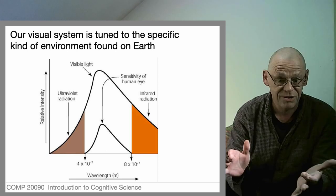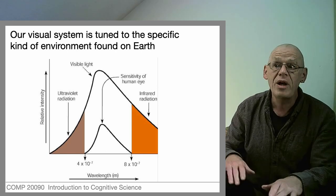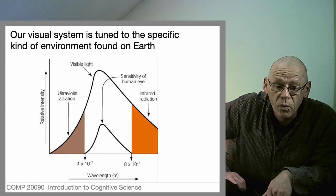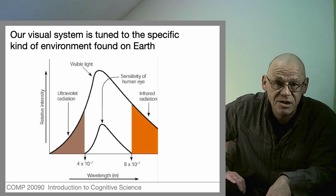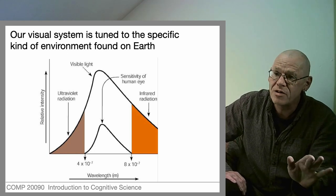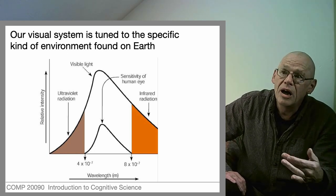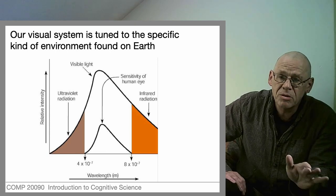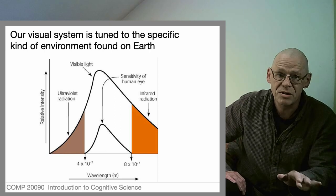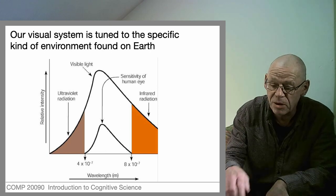If we had evolved beside a different star, we would have eyes of different sensitivity. So when we're discussing the world as revealed by visible light, that is only made possible because the eye evolved to exploit its environment, to make use of the information that's around.